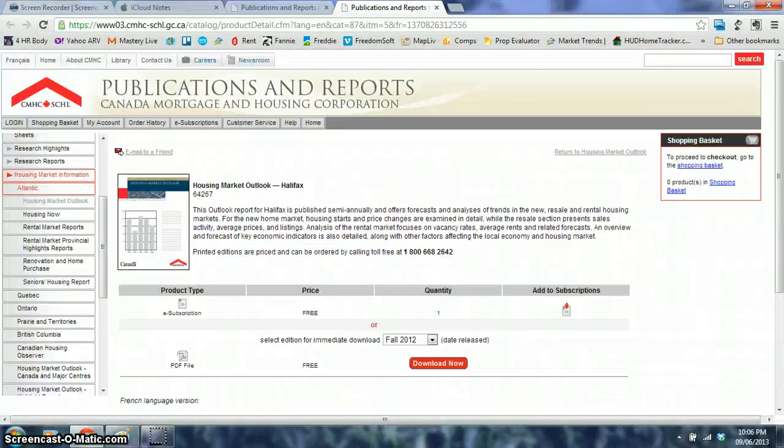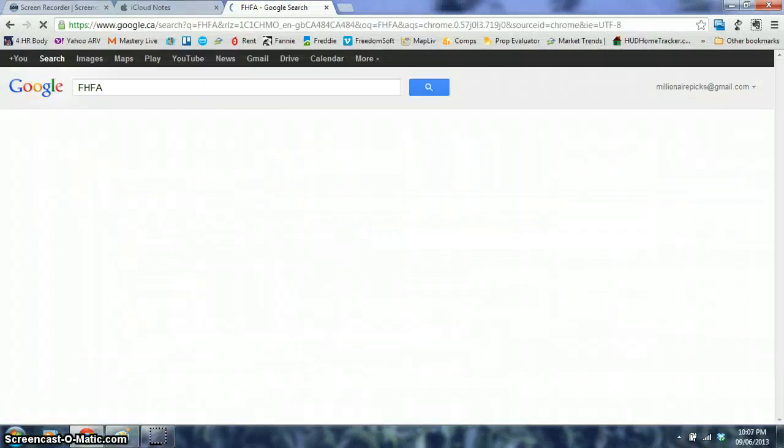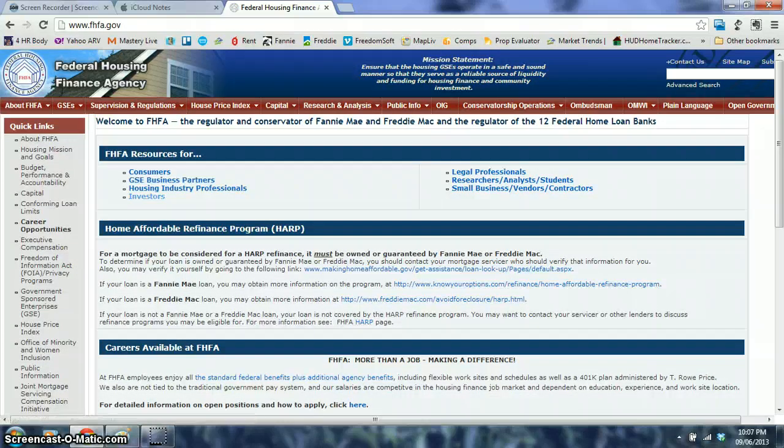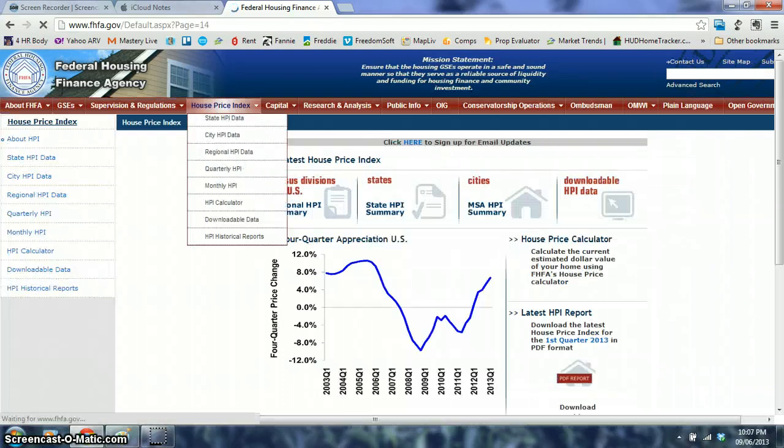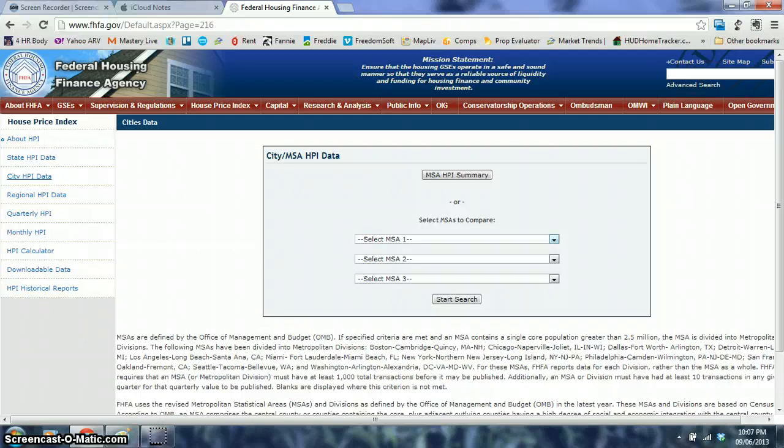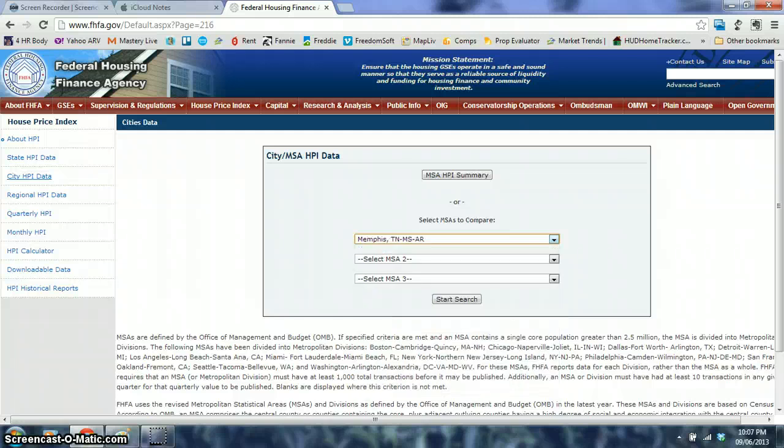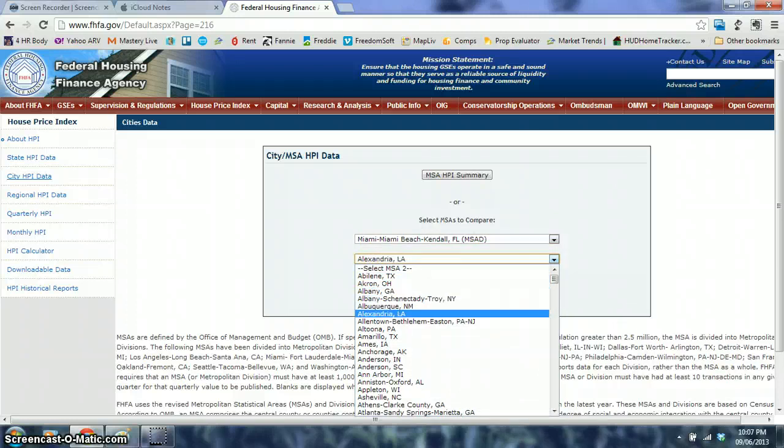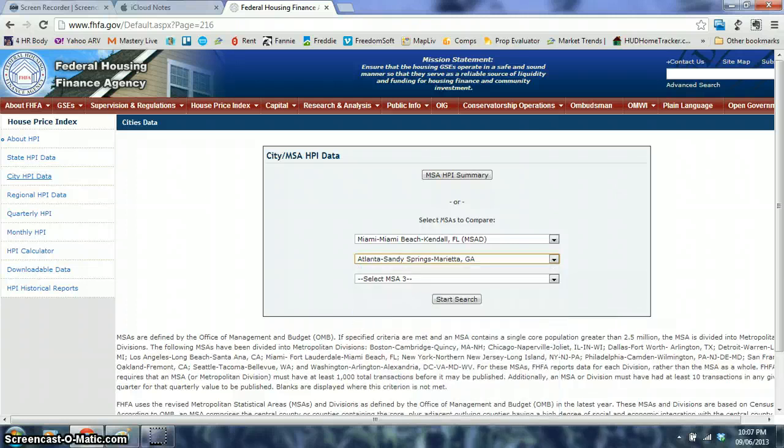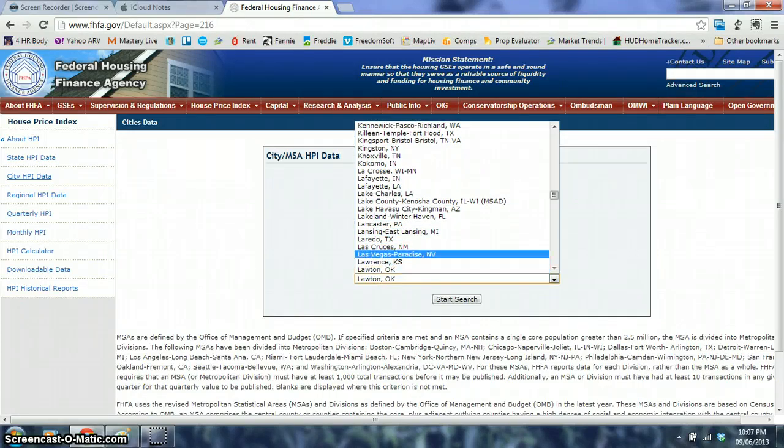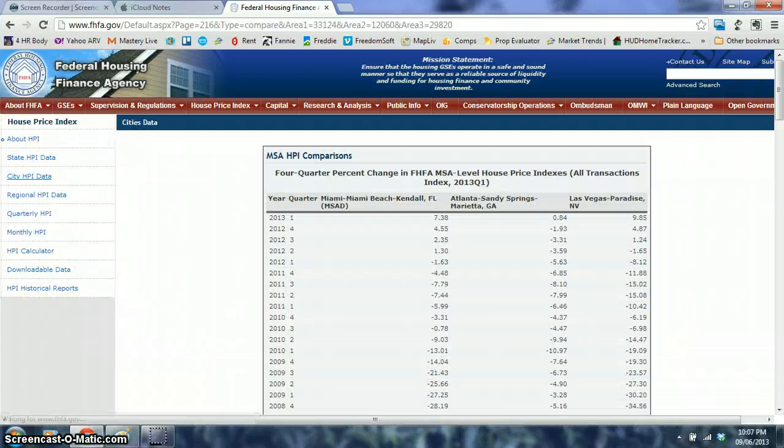Now I'm going to show you something in the United States. FHFA, the Federal Housing Finance Agency. I'm going to go to the housing price index, I'm going to go to cities. Some popular cities - people always want to ask me about Miami so I'm going to put Miami in there. The market that I invest in is Atlanta, so I'm going to put Atlanta Georgia in there. And another place that people always want to talk about is Las Vegas.